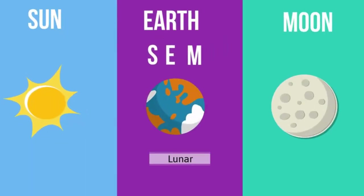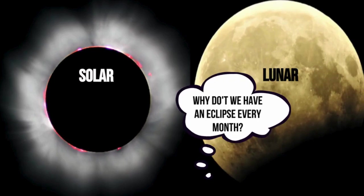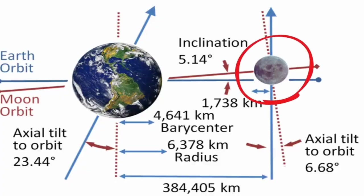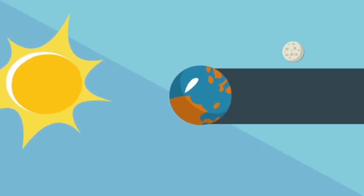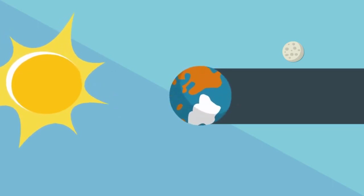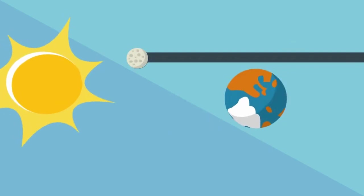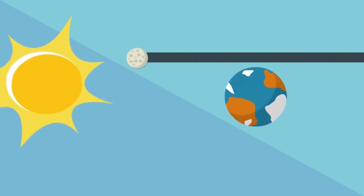You may be wondering why we don't see a solar and lunar eclipse every month. The reason is the moon's orbit around the earth is tilted about five degrees relative to the orbit of the earth around the sun. This tilt is just enough to place the moon out of the earth's shadow for most full moons and the earth out of the moon's shadow for most new moons.